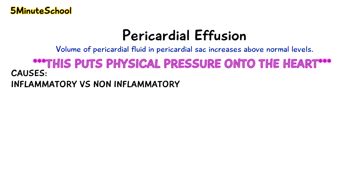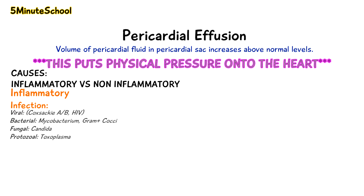The causes of pericardial effusion can be divided into inflammatory and non-inflammatory causes. Inflammatory causes include infections such as viruses like Coxsackievirus A or B or HIV, bacteria like Mycobacterium or gram-positive cocci, fungal infections like Candida, and protozoal infections like Toxoplasma.